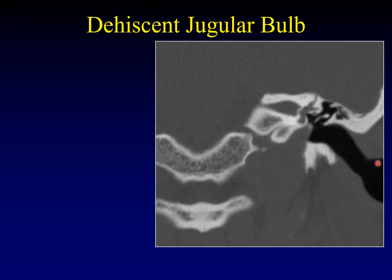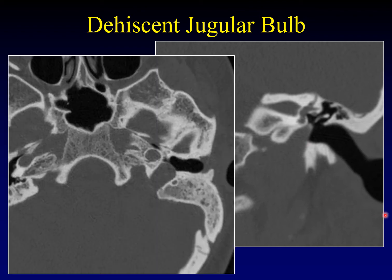There is a normal bony covering of the jugular bulb called the jugular plate. When that bony covering is dehiscent, pulsations can transmit from the jugular bulb into the middle ear and be audible as pulsatile tinnitus. You're looking for a lack of bony covering overlying the jugular bulb — normally you should be able to see the jugular plate as a thin line. On axial images, you can see the jugular bulb with a lack of normal jugular plate separating it from the middle ear cavity.